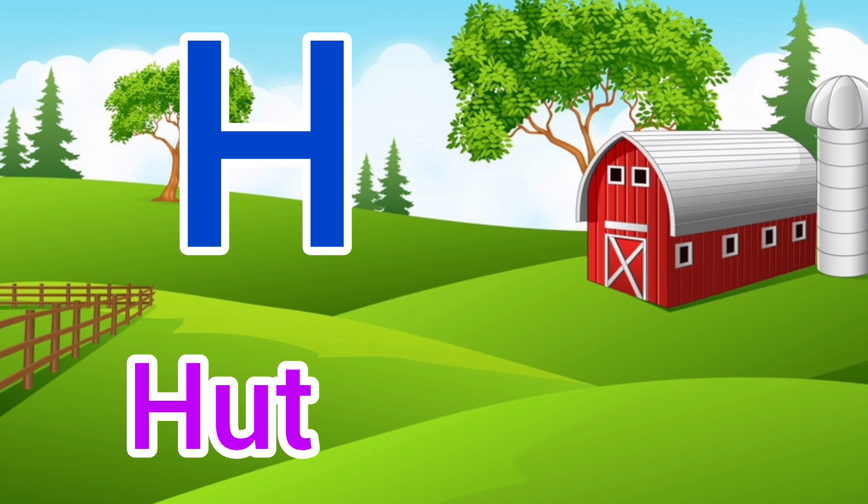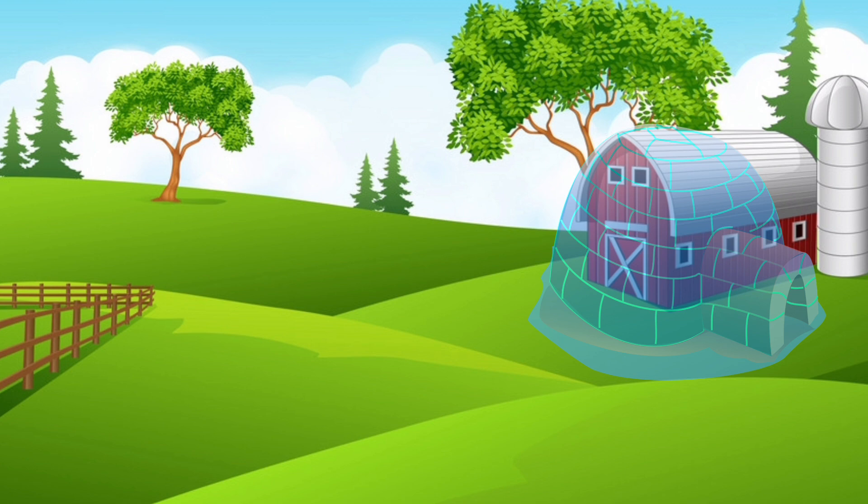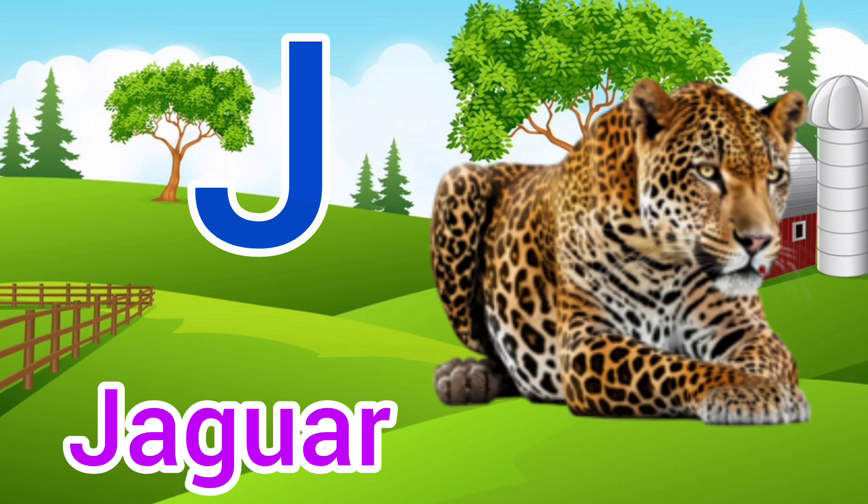I. I for Igloo, Igloo means Igloo. J. J for Jaguar, Jaguar means Tendua.